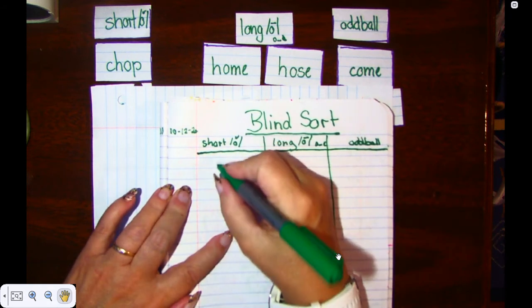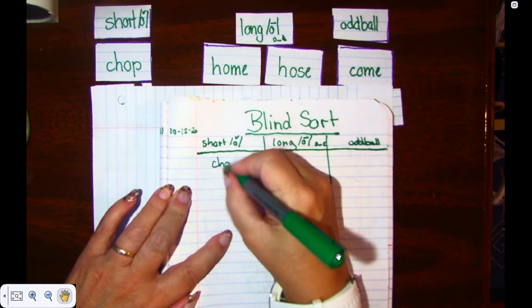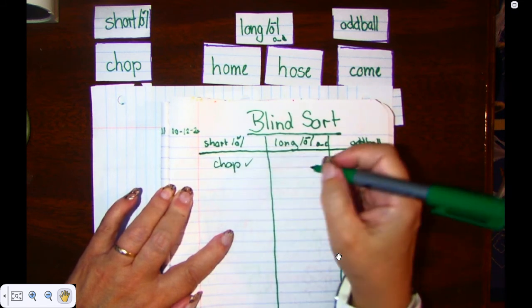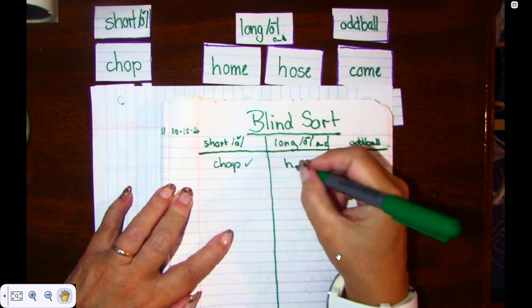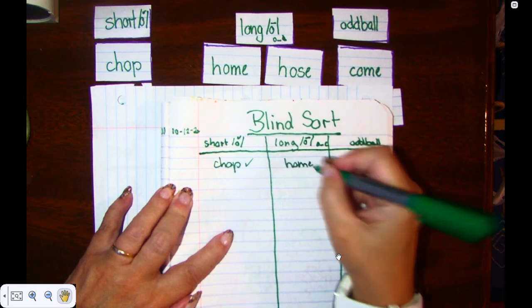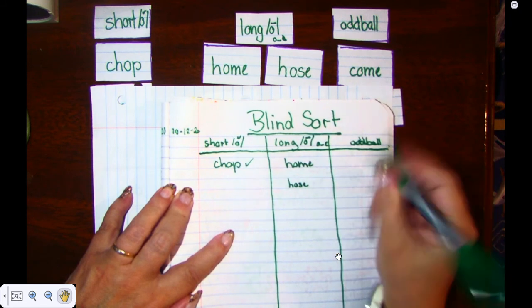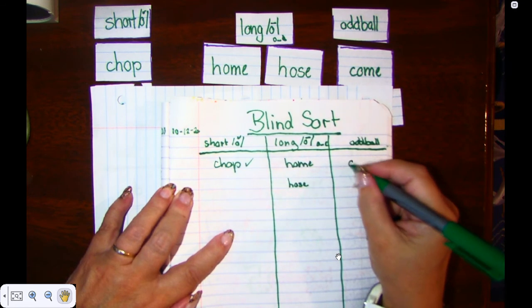So my first word is going to be chop. So if I knew that, I can put a check mark next to it. My next words are going to be home and hose. And my oddball that I uncovered are going to be come.